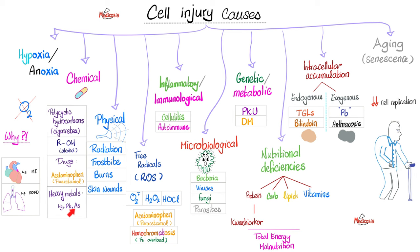Heavy metals such as mercury poisoning, lead poisoning, arsenic toxicity, etc. Physical agents such as radiation, frostbite, burns, or skin wounds. Then free radicals - also acetaminophen. You can imagine that acetaminophen is dangerous, especially if you overdose. And iron overload state known as hemochromatosis.